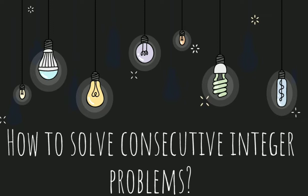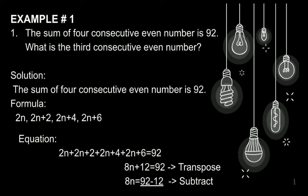Paano nga ba i-solve ang mga consecutive integer problems? Ngayon, tuturuan ko kayo sa pamamagitan ng aking examples. Example number 1. The sum of 4 consecutive even number is 92. What is the third consecutive even number? Solution. The sum of 4 consecutive even number is 92. Formula.